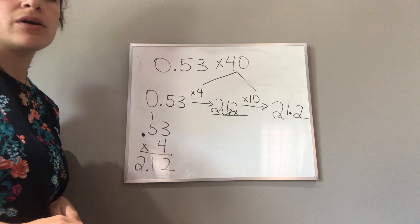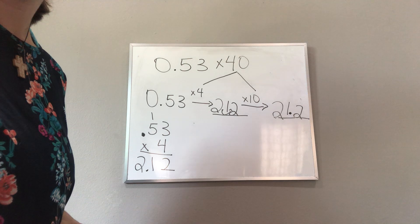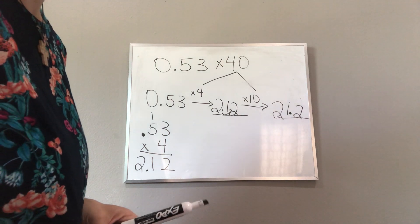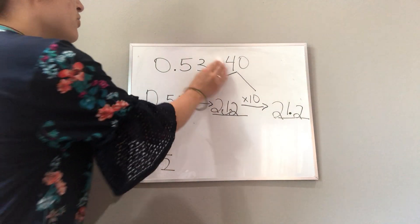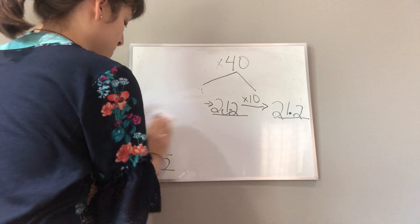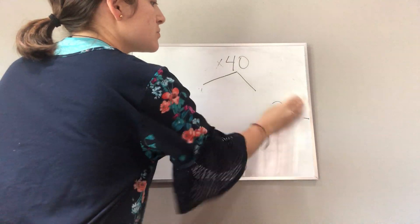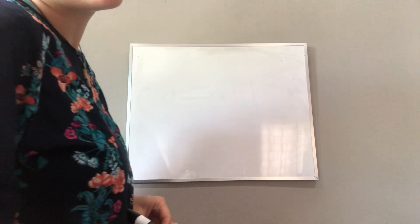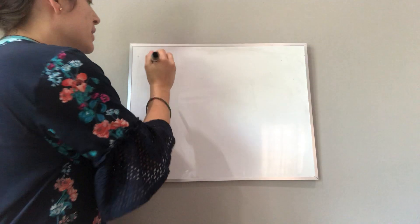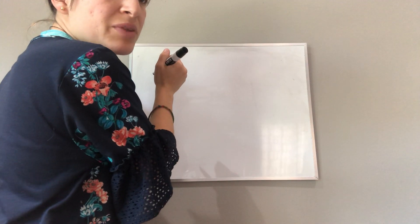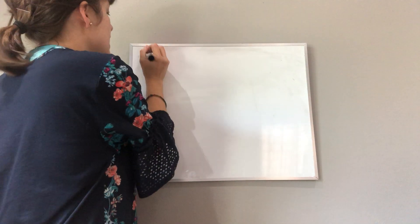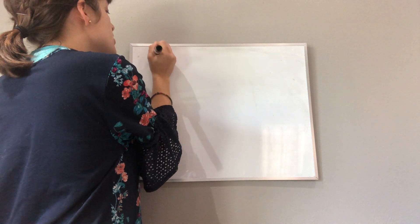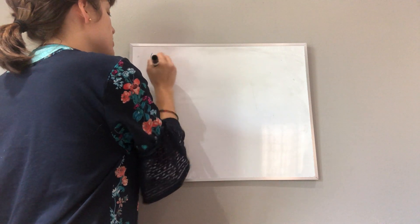I'm going to work out a couple more like this, and then you can work on exercise 4 in your workbook. This is still page 10 — now I'm looking at 6A on page 10 in your textbook.